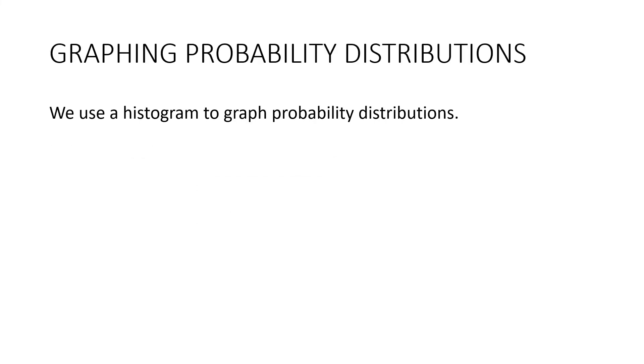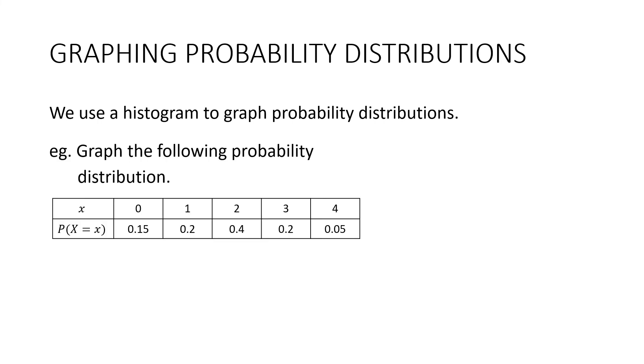And we use a histogram to graph probability distributions. So suppose we want to graph this probability distribution. We're just going to draw it up like it's a column graph. We've got 0, 1, 2, 3, 4. Here are our probabilities here, and we have just got columns sitting over the top of the numbers with no gaps.